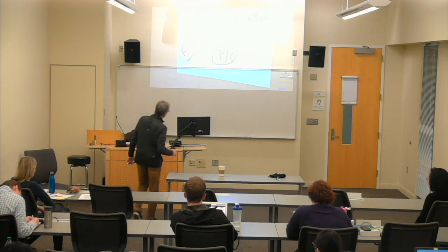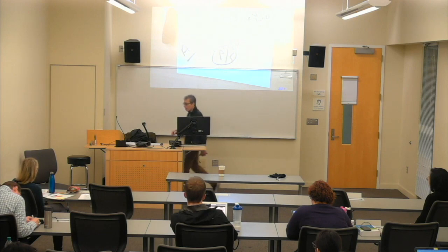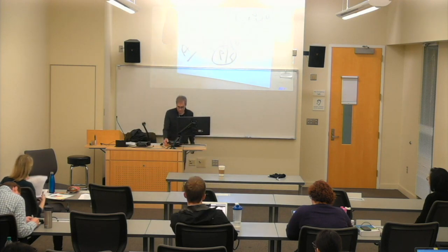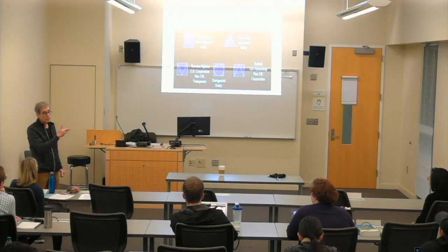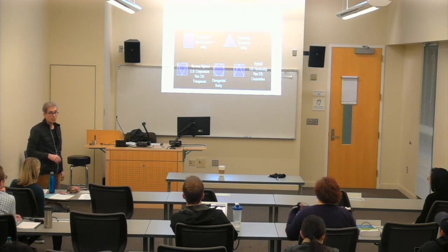I've put into the slides, in case it's useful, some symbols I may not necessarily use — I tend to draw squiggly lines to indicate a branch or a disregarded entity and so on. But these are things you'll sometimes see on organization charts, and it's helpful to keep a copy of that somewhere where you know you can find it.